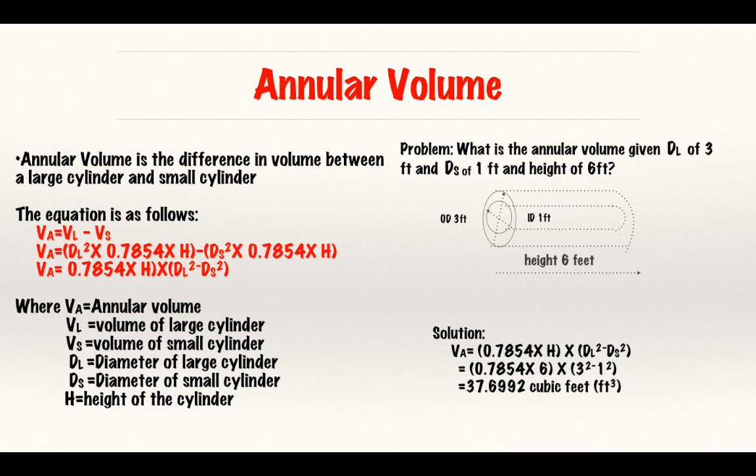So, let's get down into it. Annular volume. So, just the difference between a large cylinder and a small cylinder. Difference of volume. Basically, when I mean difference of volume, let's say you have two casings or two tubings, a casing and a tubing, or a casing and a drill pipe, or tubing and a drill pipe. Maybe one is small, one is large. And I want to find my annular volume, my volume between the two.